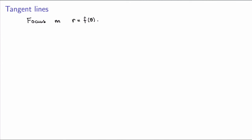Now that we know how to define polar curves, we can ask standard calculus questions about them. For example, how do we get the equation of the tangent lines to a polar curve? We're going to focus on the class of polar curves we can write as r = f(θ). The idea is to think of theta as a parameter and think of the polar curve as a parametric curve in Cartesian coordinates. Specifically, x = r cosθ, and since r = f(θ), we write this as f(θ)cosθ. Similarly, y = r sinθ = f(θ)sinθ. So we can think of both x and y as functions of theta, defining a parametric curve.